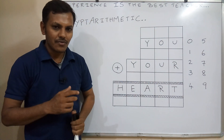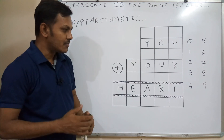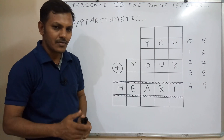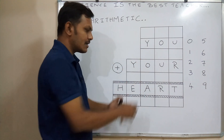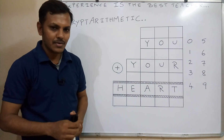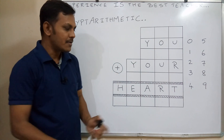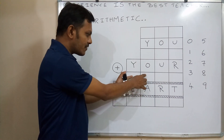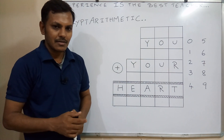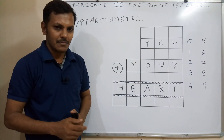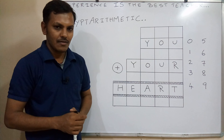We have to follow some rules. Rule number 1: we should not use 2 different numbers for the same letter. Rule number 2: we should not use the same number for 2 different letters. Rule number 3, the very important rule: maximum carry-over is 1.